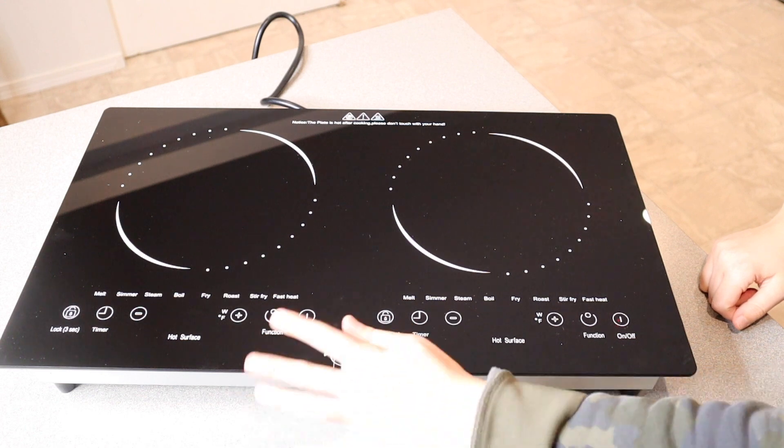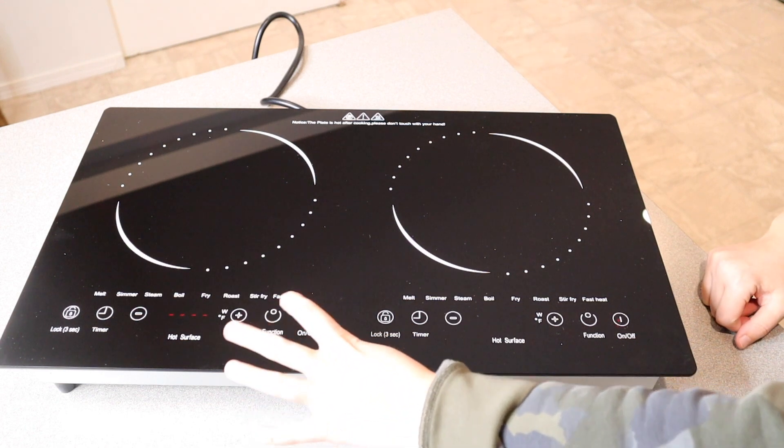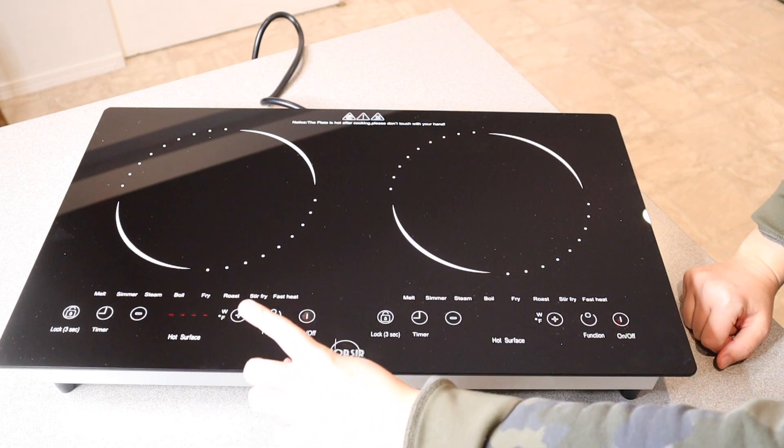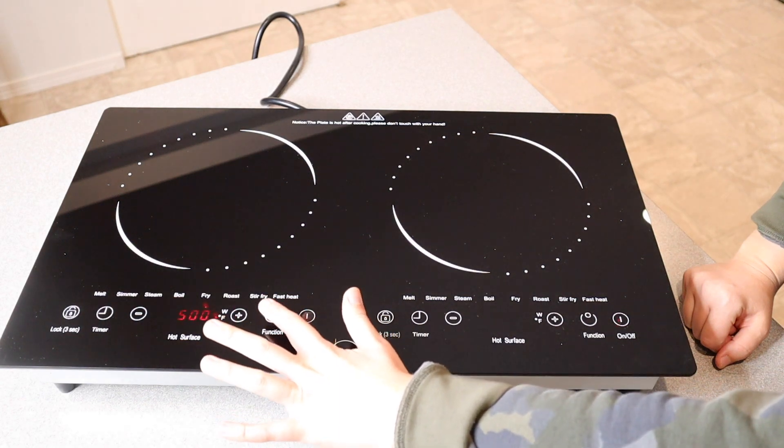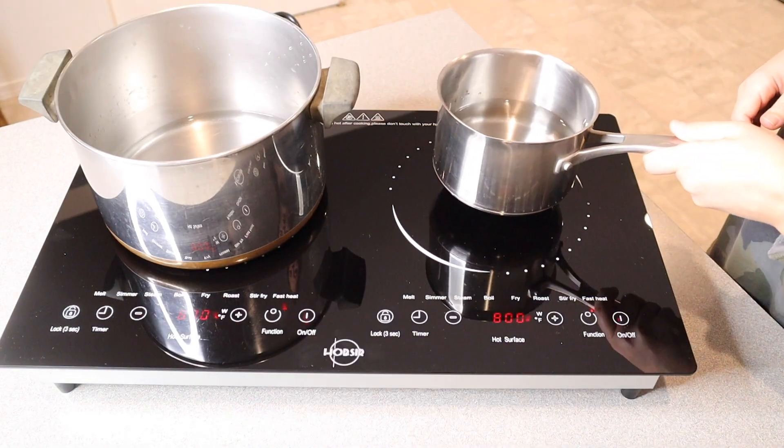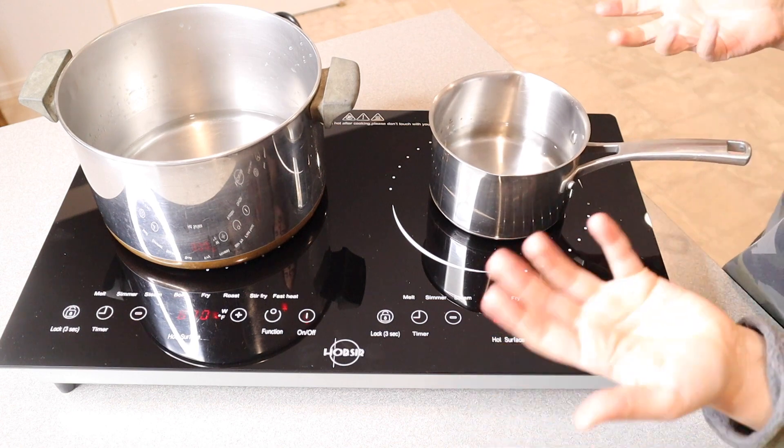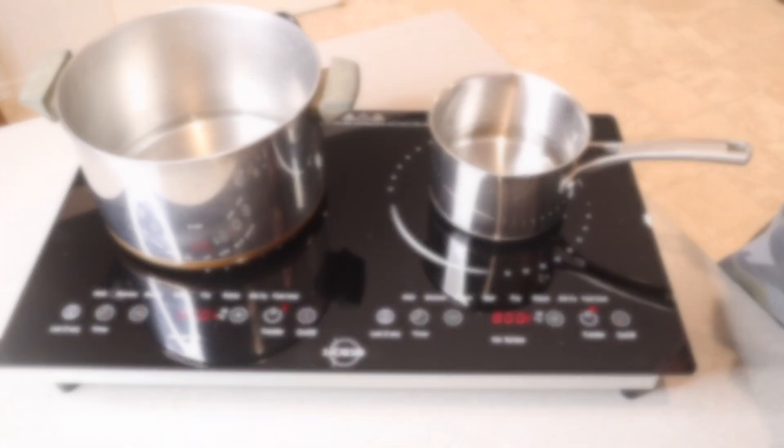I'm going to go ahead and turn both of these cooktops on, and we're going to do the fast heat. I have two cups of water in both of these vessels. I'm going to go ahead and bring them to a boil and then check back in.